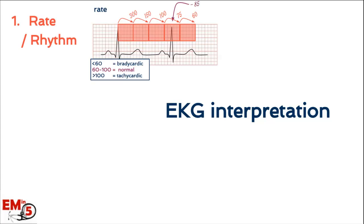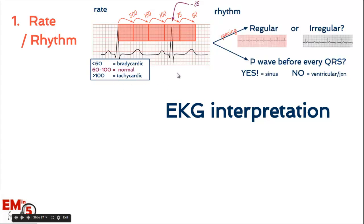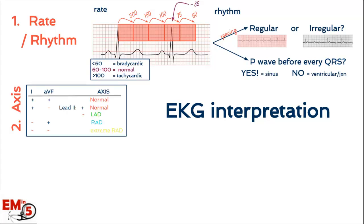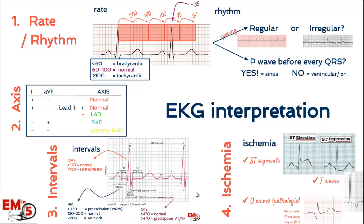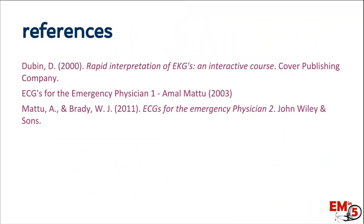Let's do a quick recap. For rate, calculate over big boxes: 300, 150, 100, 75, 60 — determine if bradycardic, normal, or tachycardic. For rhythm: is the spacing regular or irregular, and is there a P wave before every QRS? For axis: look at leads 1 and AVF — if both positive, normal axis. For intervals: check the EKG-calculated QRS, PR, and QT values for normal ranges. And lastly, look for the three signs of ischemia. Thanks for joining us on EM in 5.